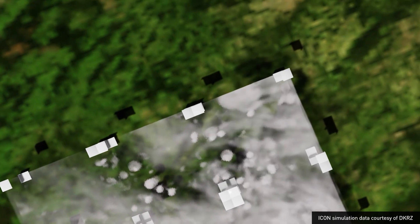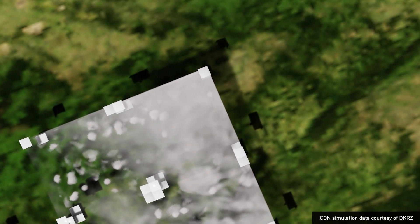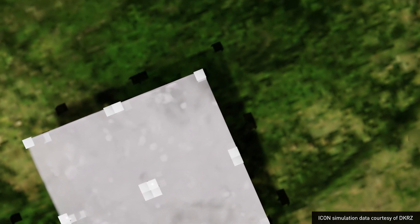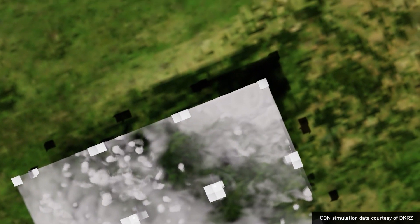Using Omniverse, we can load only the parts of the data that are needed locally. Each chunk is represented efficiently using NanoVDV, a sparse volumetric data structure that is optimized for GPUs.